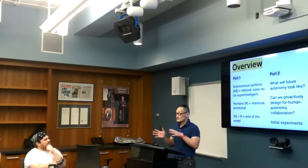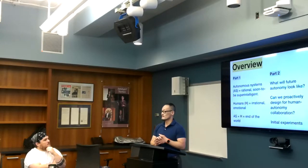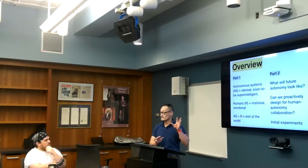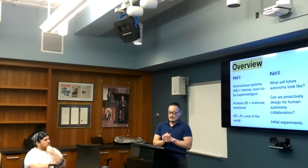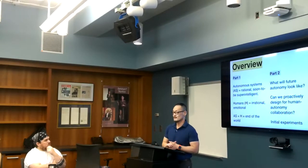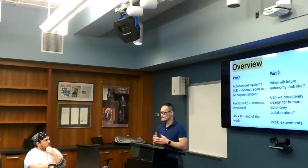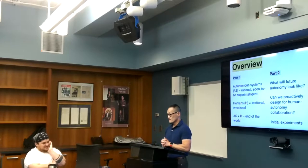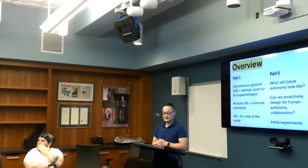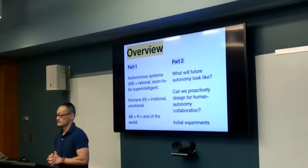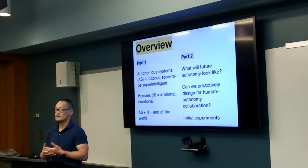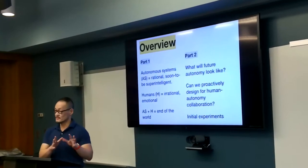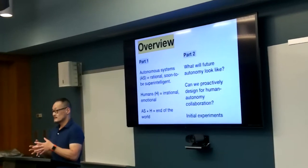So just as an overview, this talk is split into two parts. The first part is the rationale for the second part, and I have it in the form of a mathematical equation. In the future, autonomous systems will be rational and they will soon be super intelligent, clutched with lots of data. And humans, we don't change very quickly. We're very irrational and highly emotional. When you have those two things together, you get the end of the world.